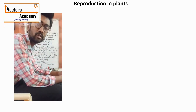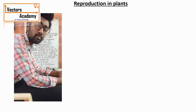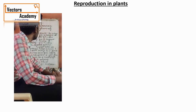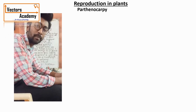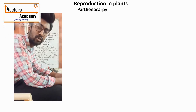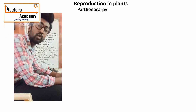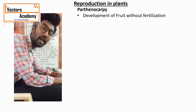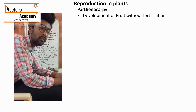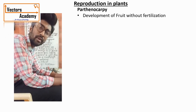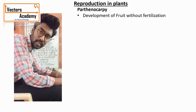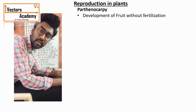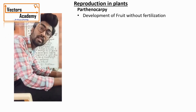Good afternoon students. Today we are going to study about parthenocarpy, apomixis, and polyembryony. Parthenocarpy — 'parthenos' means without and 'carpi' means fruit — is a type of process where there is formation of fruit without the process of pollination and fertilization. Generally, fruit formation takes place with the help of fertilization, but in parthenocarpy there is no fertilization, no pollination, yet there is formation of a fruit.